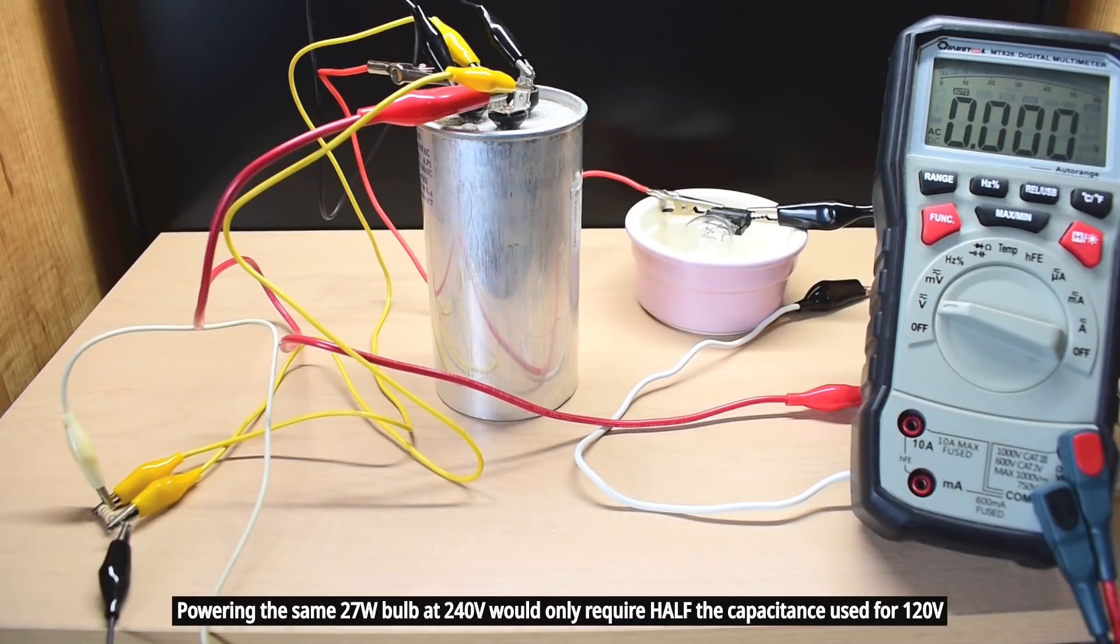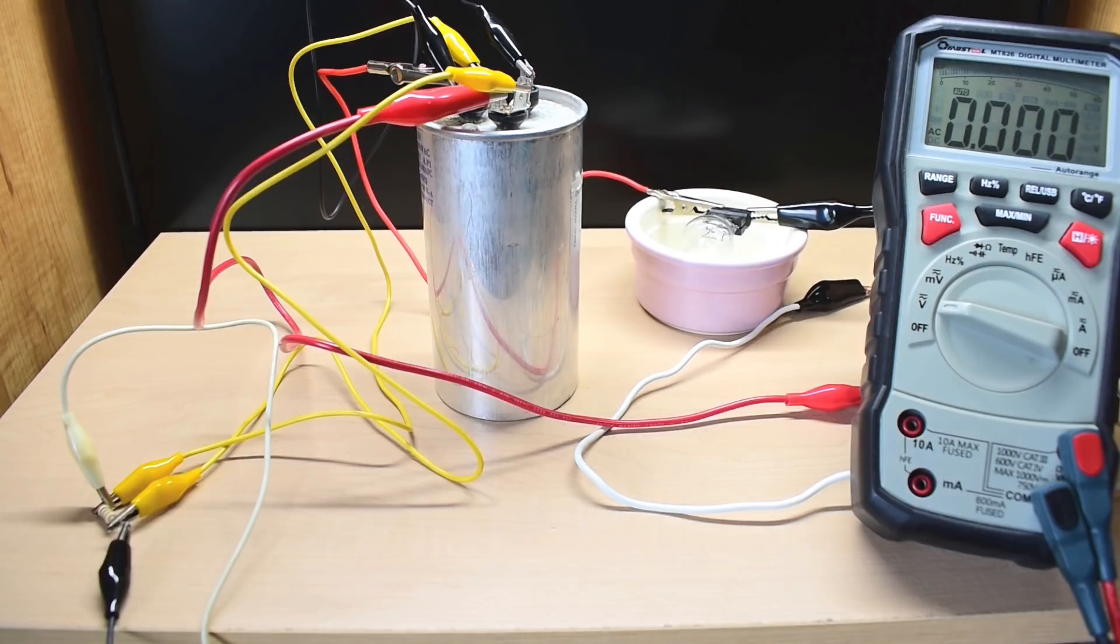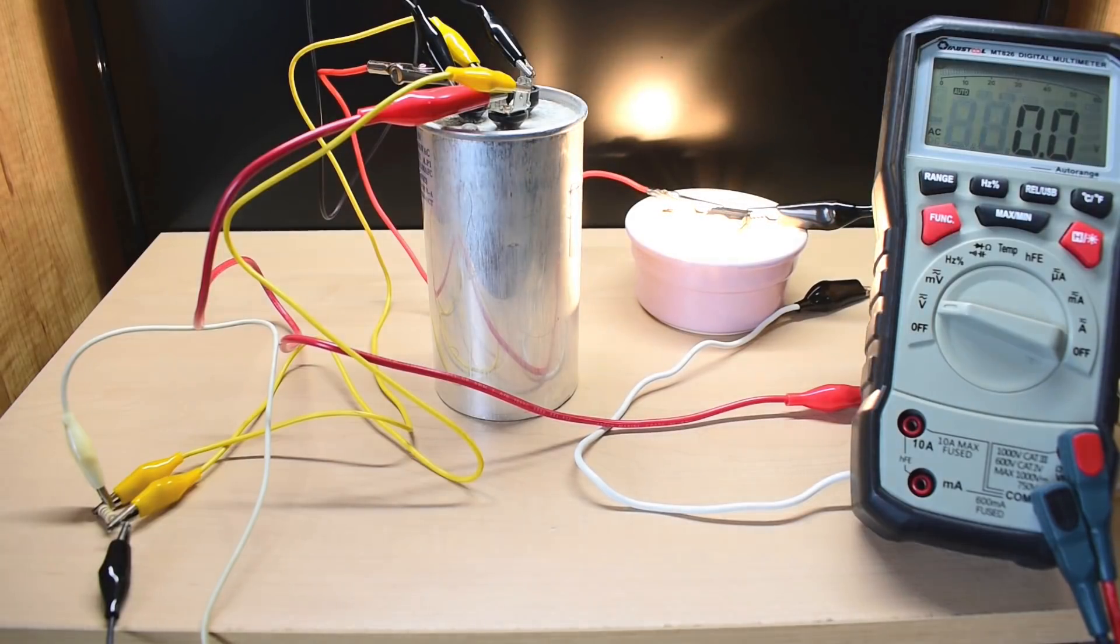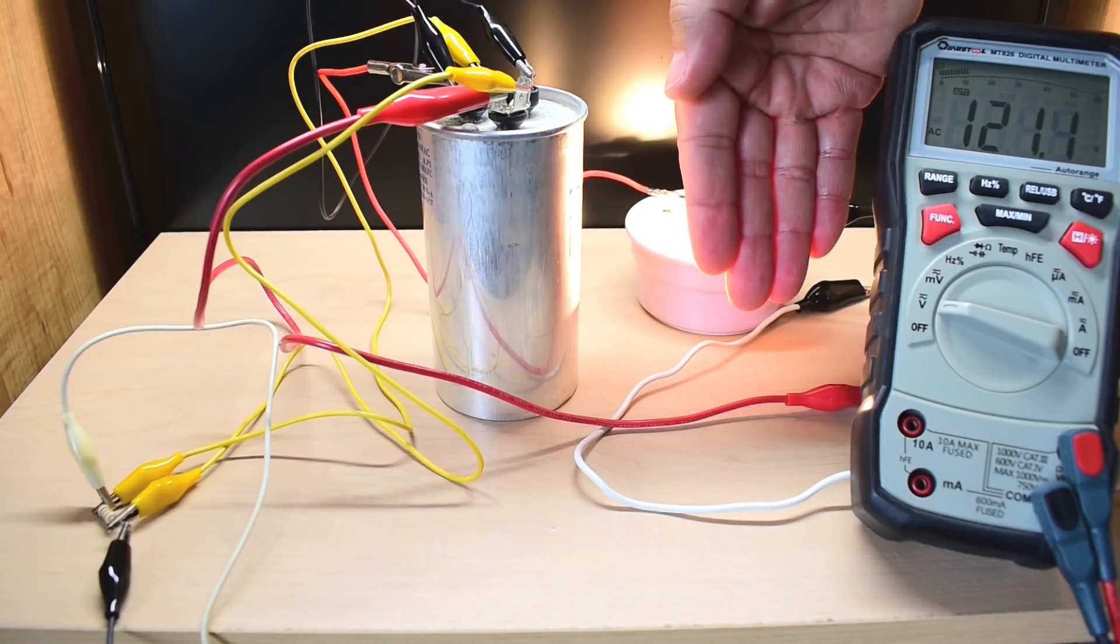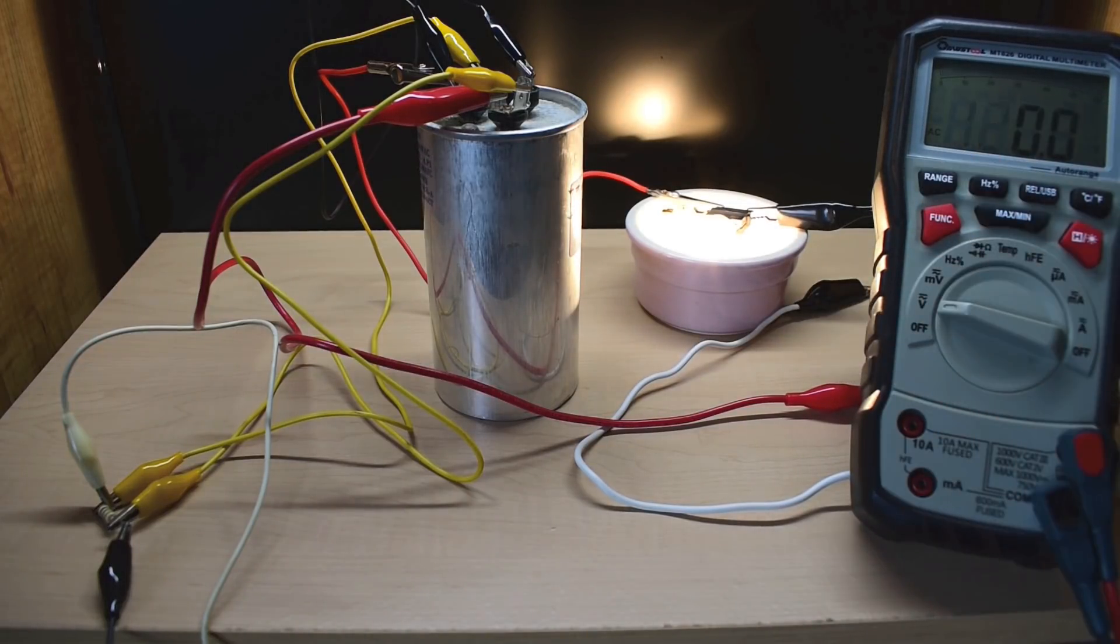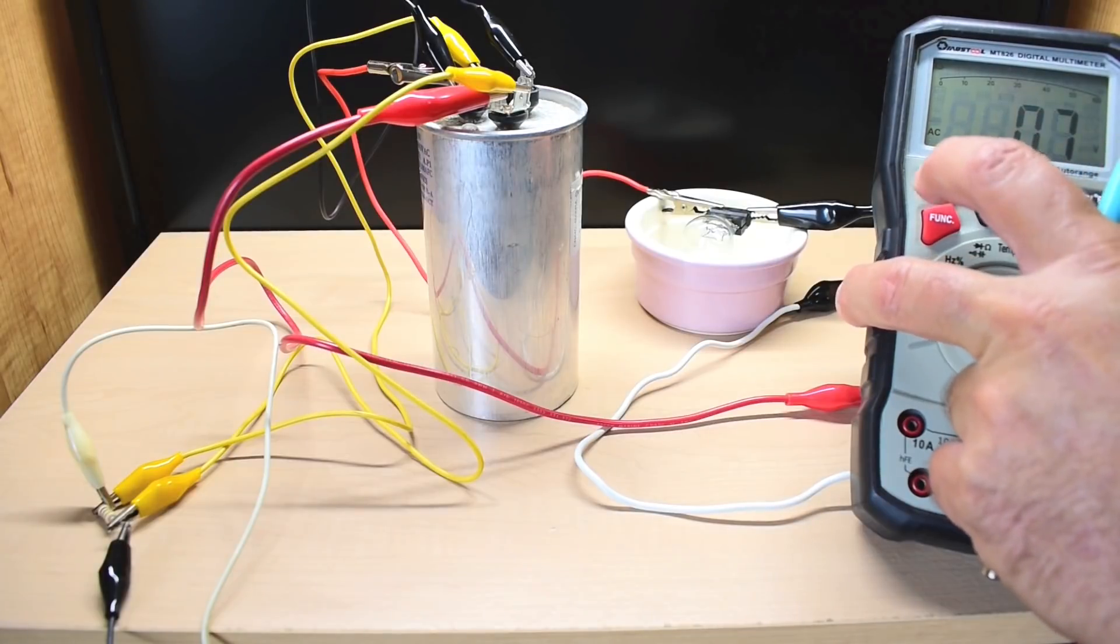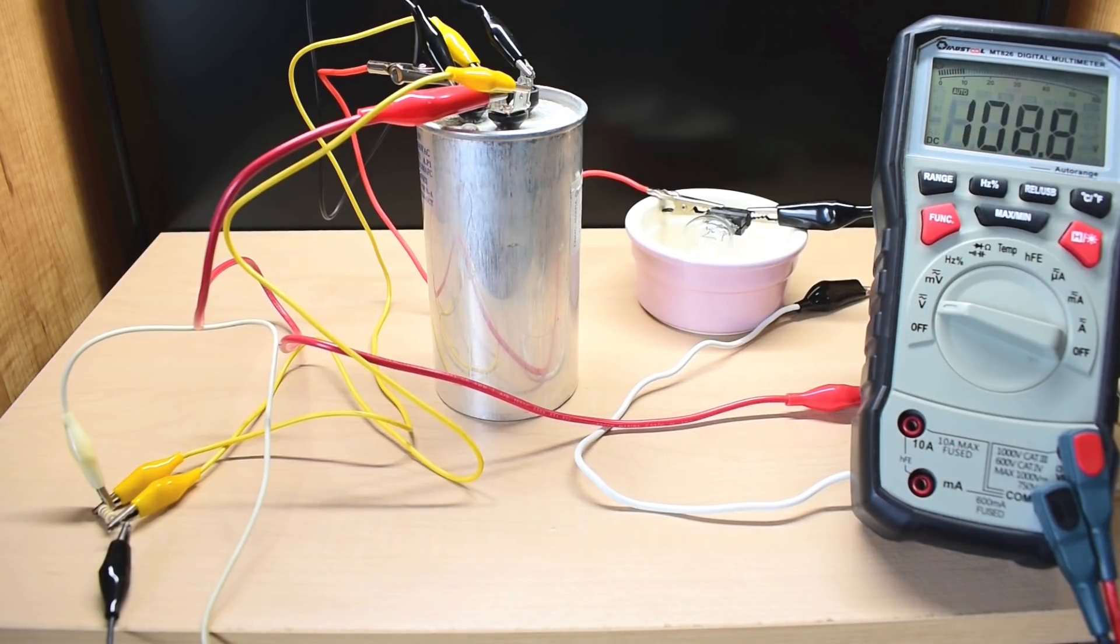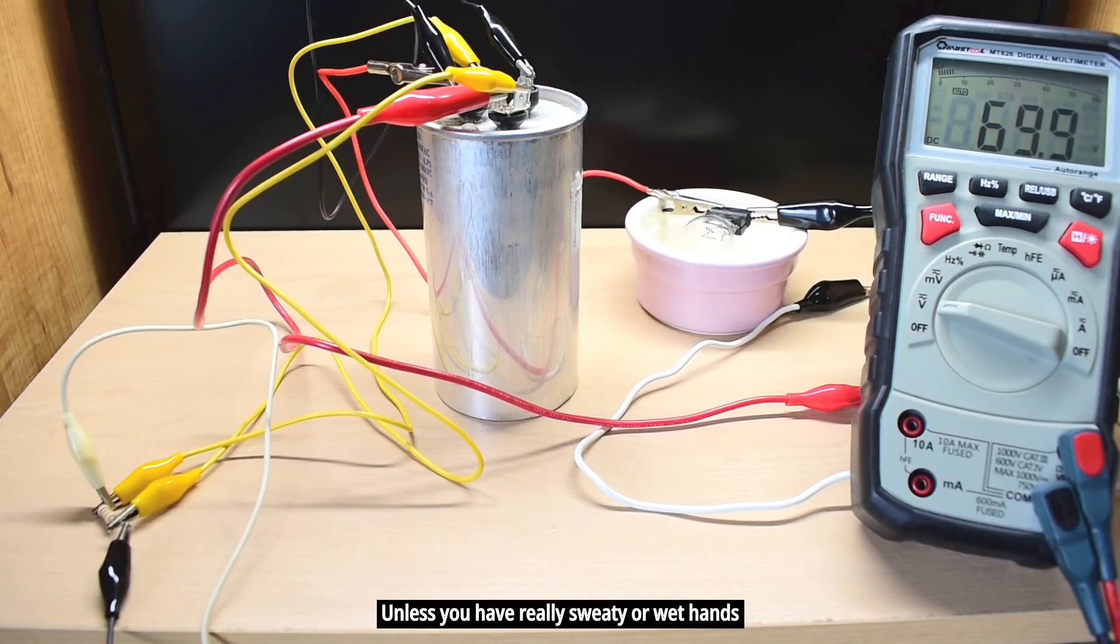All right, just to show you how this resistor bleeds off the charge when power is disconnected, I'm going to plug this back in. All right, you can see line voltage is at 121. Now when I disconnect this, I'm going to switch this to DC. You can see it's bleeding off that charge. And it does it fairly quickly for the amount of capacitance that I'm using. When it gets below 50, it's pretty safe to touch. It takes about 20 to 30 seconds to get it down low enough.